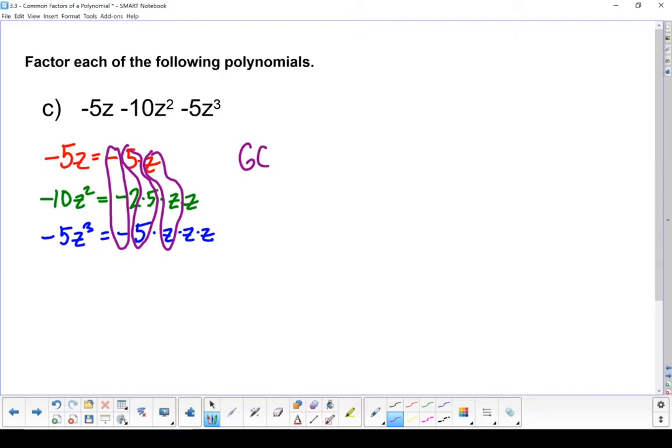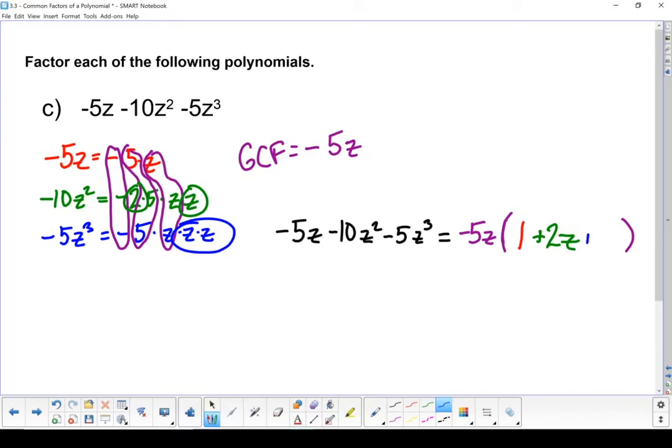Let's rewrite this. So my greatest common factor is a negative 5z. So negative 5z minus 10z squared minus 5z cubed equals, start with the greatest common factor, negative 5z. First term, there's nothing left. We took all the factors out. Notice how I've also taken the negative sign out. All I'm left with is a 1, and it's a positive 1 because I took that negative sign out. Our second term, all that's left is that 2 and that z, so plus 2z. Last one, I'm left with those two z's, so plus z squared. There is my factored form. Now if I were to expand that, if I were to multiply the negative 5z back in, I'd be all the way back at where I started.